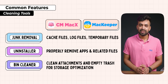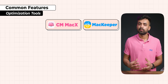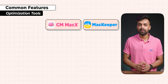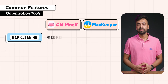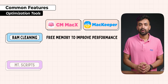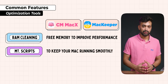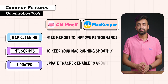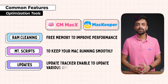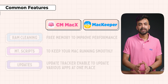When it comes to optimization and making your Mac fast, they both offer a couple of tools. Both applications include RAM cleaning tools to free up memory and improve performance. They also run maintenance scripts to keep your Mac running smoothly. An update tracker shows updates for all installed apps and allows you to update various apps from one place.